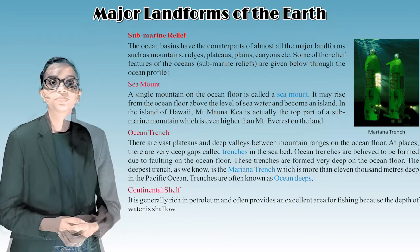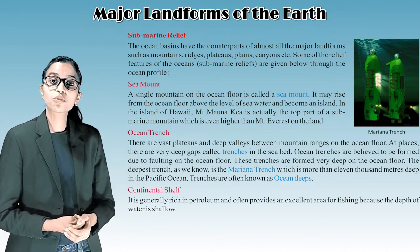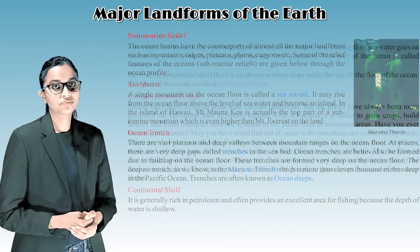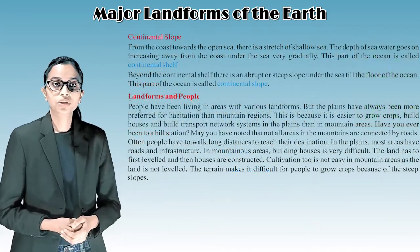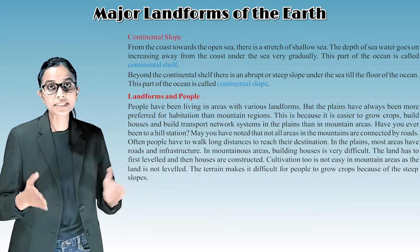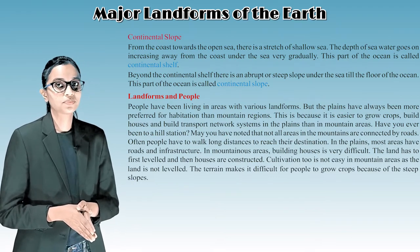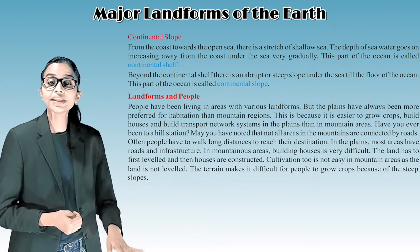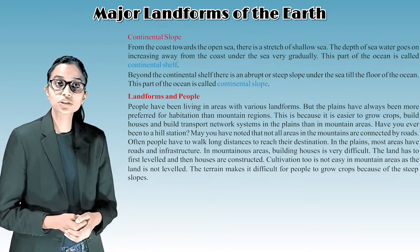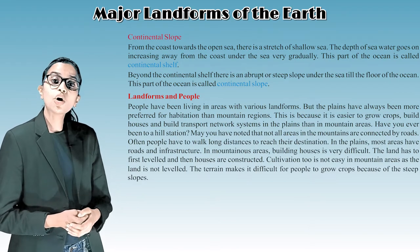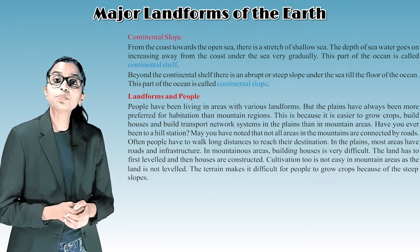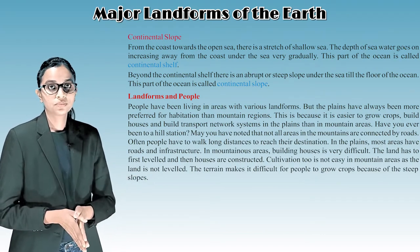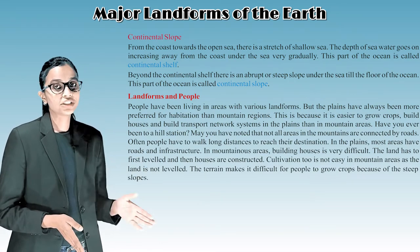Continental shelf: it is generally rich in petroleum and provides an excellent area for fishing because the water is shallow. Continental slope: from the coast towards the open sea, there is a stretch of shallow sea where the depth gradually increases — this is the continental shelf. Beyond the continental shelf, there is an abrupt or steep slope down to the floor of the ocean, called the continental slope.